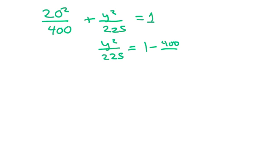So we have 20 squared over 400, which is just going to be 1, plus y squared over 225 equals 1. And when you subtract, you're going to get y squared over 225 equals 1 minus 400 over 400. That just equals 1. So you get y squared over 225 equals 0. So y is just going to be equal to 0.